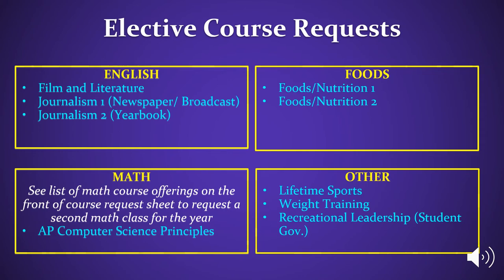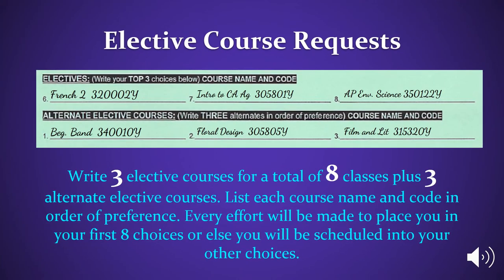Please take a moment to read the elective choices available for English, Math, Foods, and Other Subject Areas. Select a total of 8 classes plus 3 alternate elective courses. List each course name and code in order of preference. Every effort will be made to place you in your first 8 choices, or else you will be scheduled into your alternate choices.